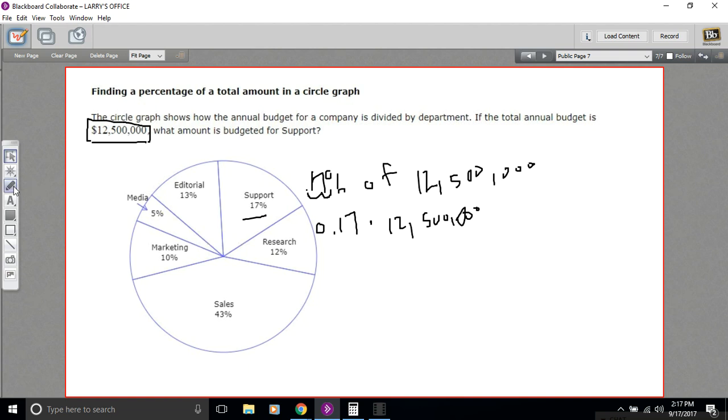So that is our answer. The amount that this business budgets for support is $2,125,000. So that is how to find the percentage of a total amount from a circle graph.